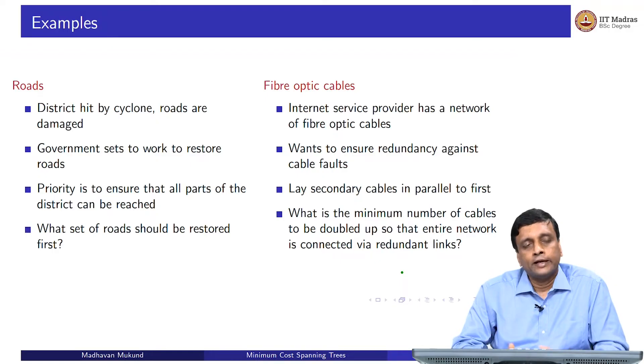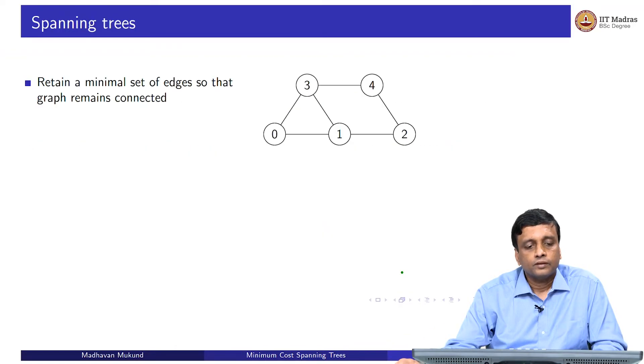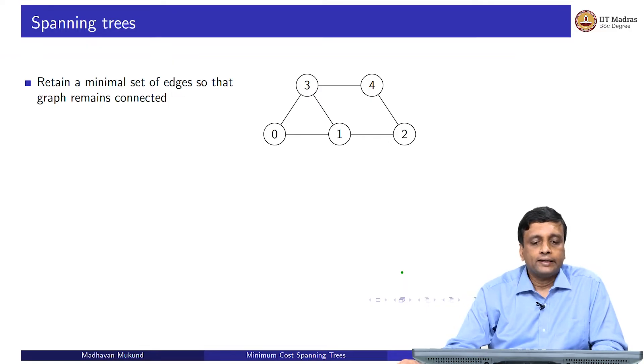Of course, you could duplicate all the cables on all the roads. But is there a smaller set of cables that you can duplicate so that if you lay these cables, still everybody will be connected even if the original cables get cut? This is a problem that is called a spanning tree. You want to take a graph which has a certain number of edges - they could be roads in the network or they could be these telecom fiber connections - and you want to retain a minimal set of edges so that the graph remains connected.